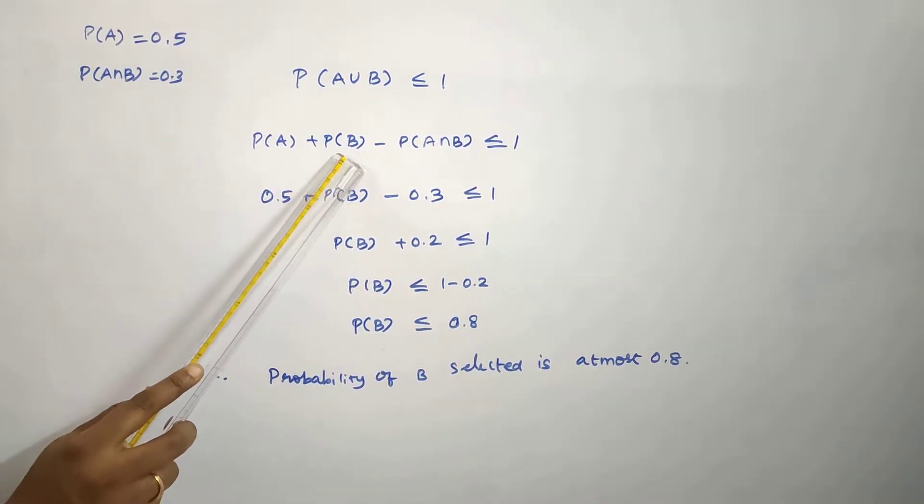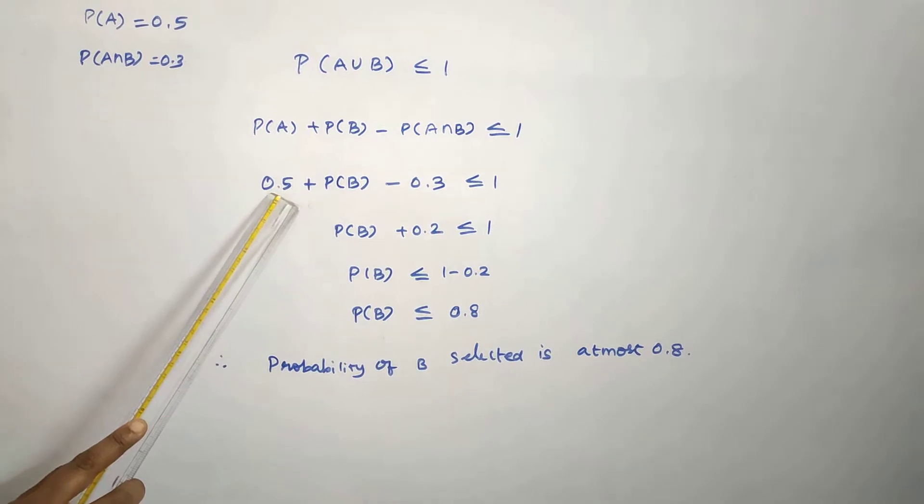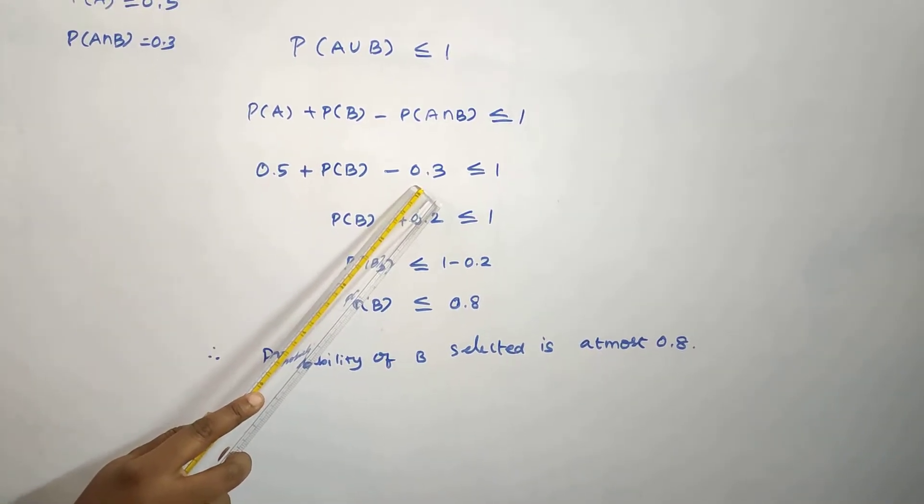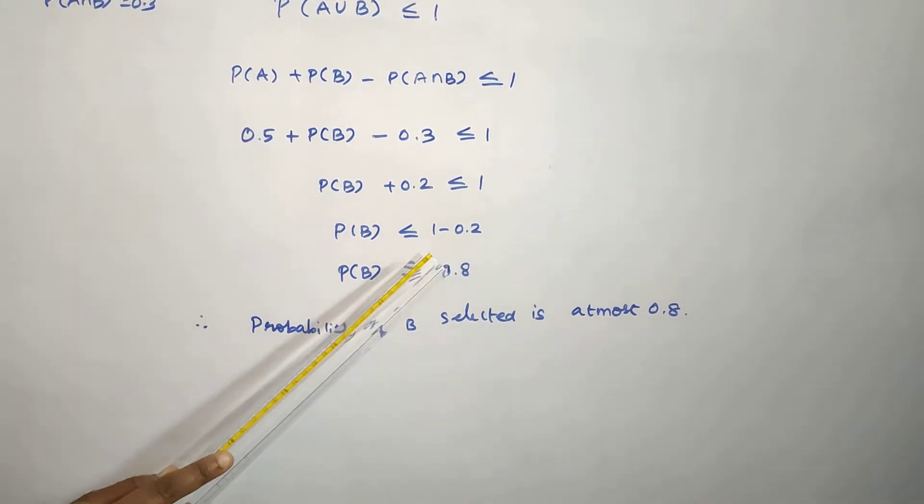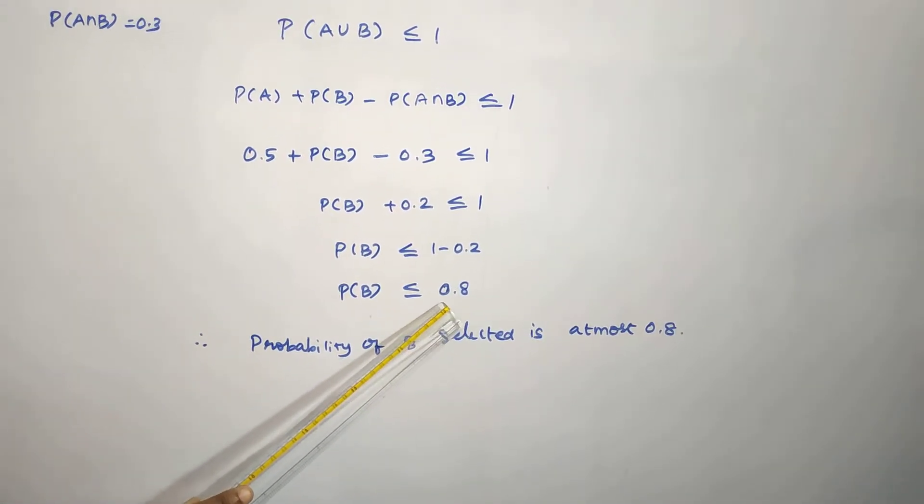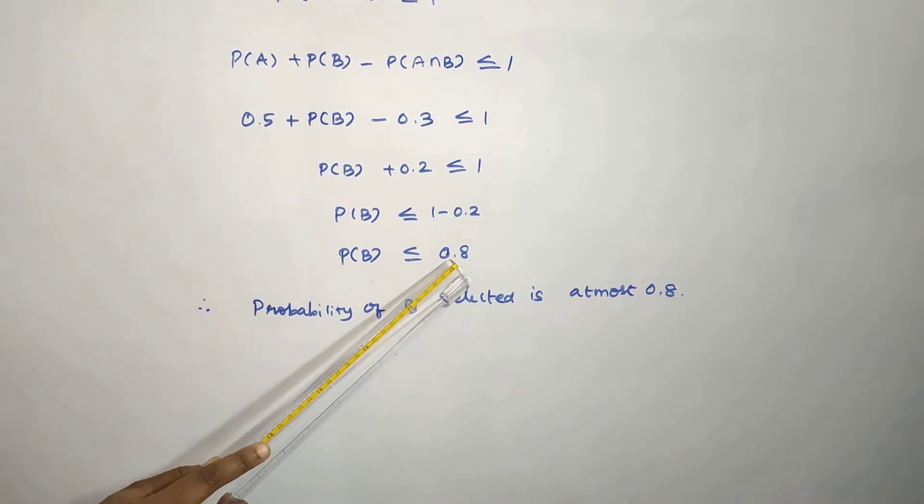P of A value 0.5, P of B minus 0.3 is less than or equal to 1. 0.5 minus 0.3 is 0.2. Plus 0.2 on the other side is minus 0.2. 1 minus 0.2 is 0.8. P of B is less than or equal to 0.8.